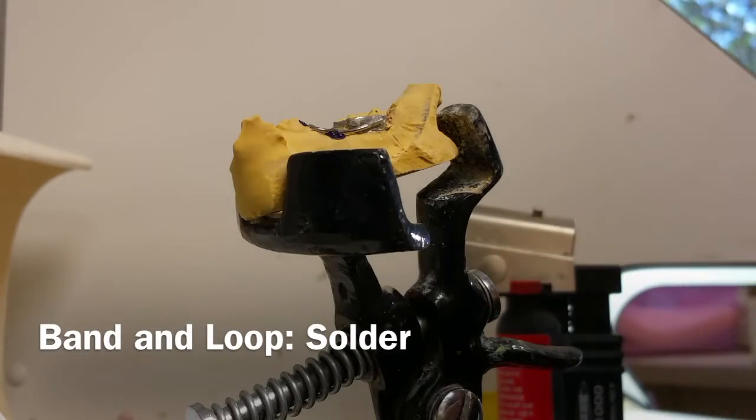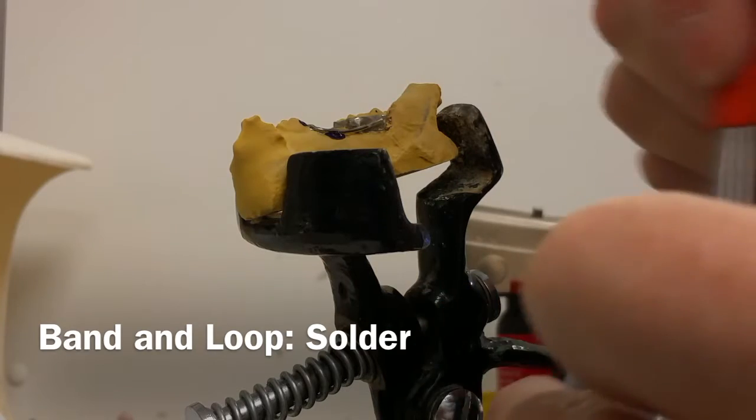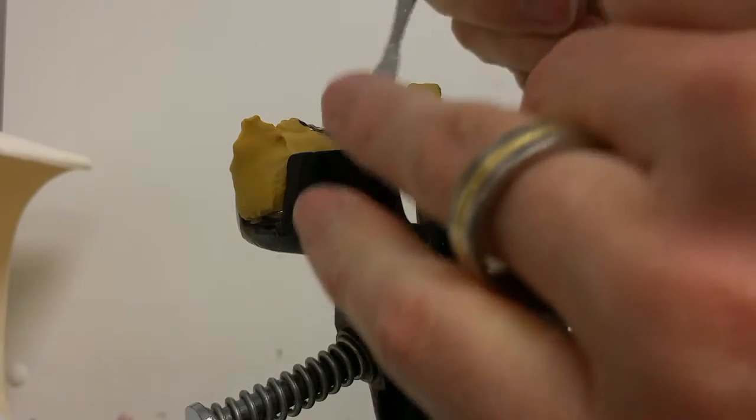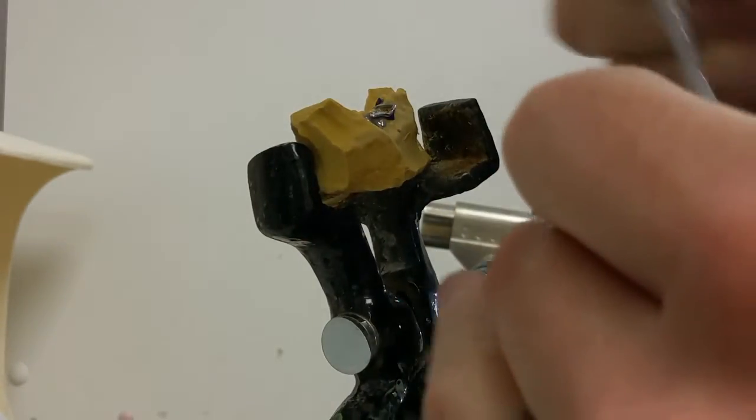Continuing the band and loop series, today is solder. Pretty easy, just four simple steps. First step, apply the flux. I'm using this flux from JBC. It's pretty good, pretty smooth.